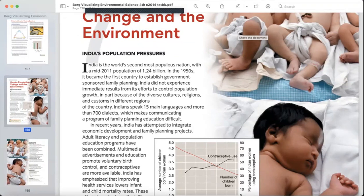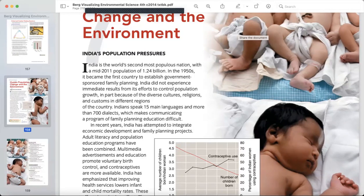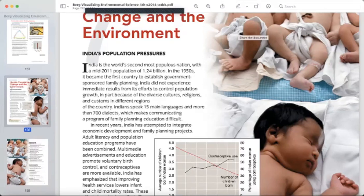it became the first country to establish government sponsored family planning. India did not experience immediate results from its efforts to control population growth, in part because of the diverse cultures, religions, and customs in different regions of the country. Indians speak 15 main languages and more than 700 dialects, which makes communicating a program of family planning education difficult.